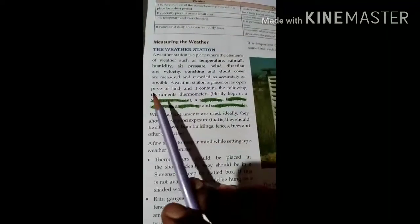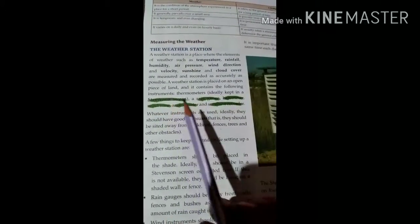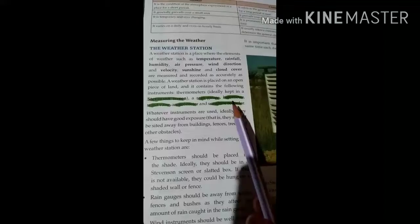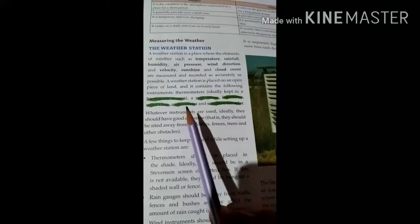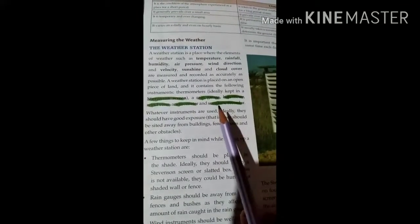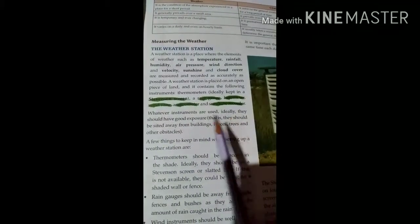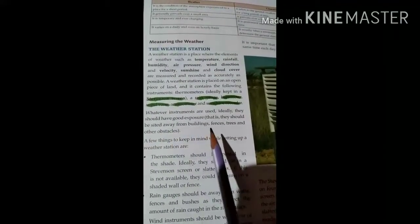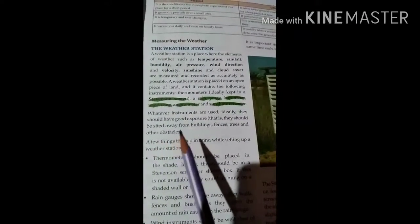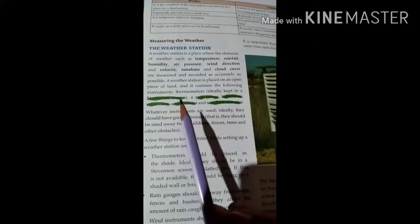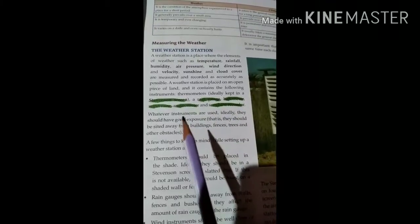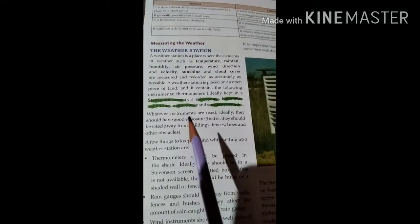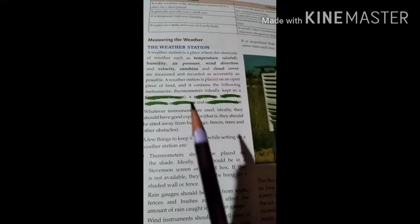A weather station is a place on an open piece of land and it contains the following instruments: thermometer ideally kept in a Stevenson screen or rain gauge, barometer, wind vane, anemometer, and sunshine recorder. Whatever instruments are used, ideally they should have good exposure. They should be situated away from buildings, fans, trees, and other obstacles. Whatever instruments like we have here, Stevenson screen or rain gauge, barometers, they should be kept in an open place, not under trees or under buildings. When they are in the open place, they can nicely record the weather of the particular day.